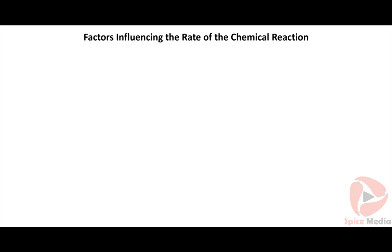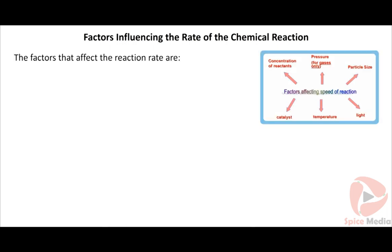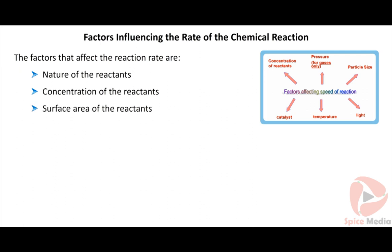Chemical reactions proceed at different rates. The factors that affect the reaction rate are: nature of the reactants, concentration of the reactants, surface area of the reactants, temperature, and catalyst.